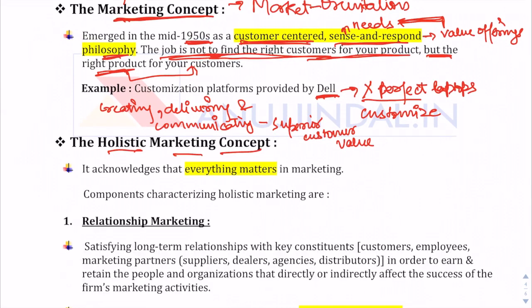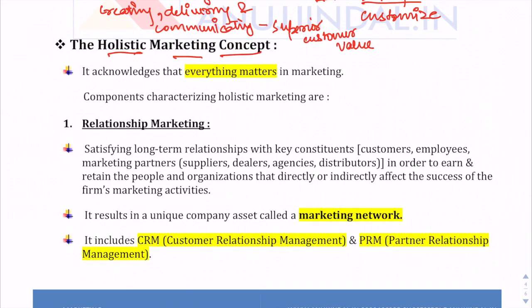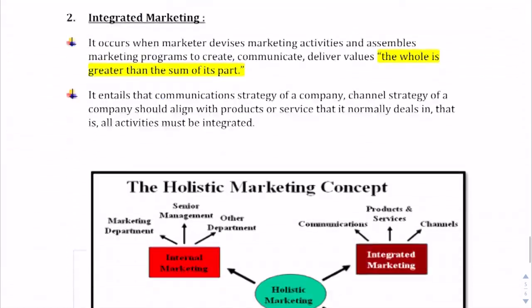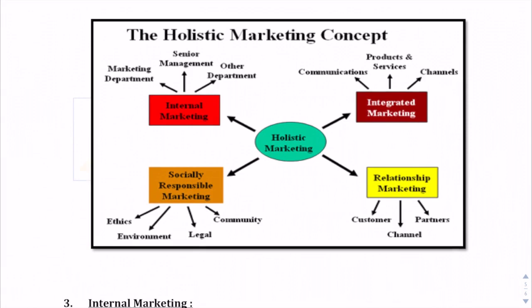The holistic marketing concept — as the name suggests — means including everything. According to this concept, everything matters in marketing: everything that affects the business of a company and everything that affects the motives behind consumer purchases. Everything in the interaction between the consumer and the producer matters, and the marketer has to take care of all of it. Holistic marketing concept comprises four parts: internal marketing, integrated marketing, socially responsible marketing, and relationship marketing.